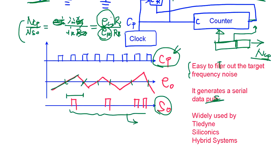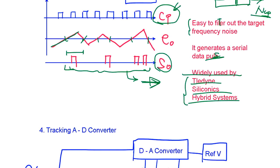So this data pulse can be used for various encoding, decoding of the data. That's why this is widely used in commercial products like Teledyne, Siliconix, and hybrid systems. This is like balancing the current flow from both sides and go up and down, just generate the number of pulses that indicate the input voltage.